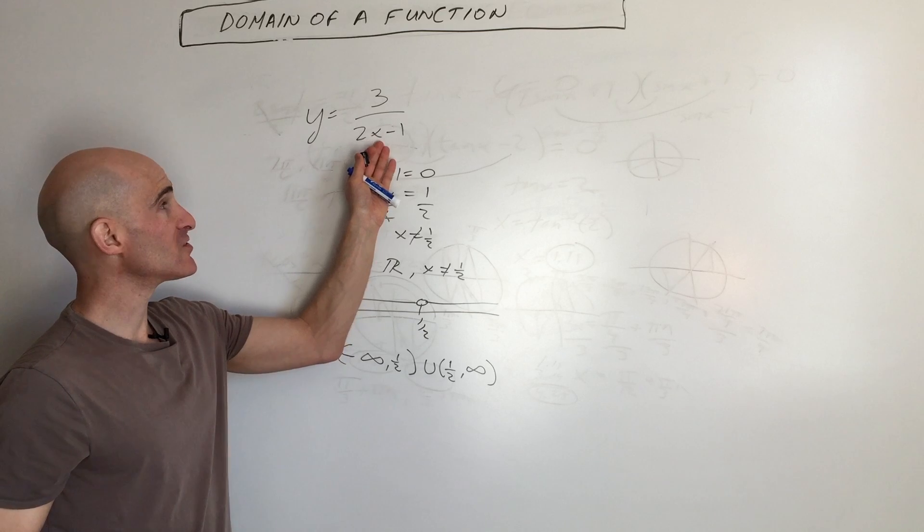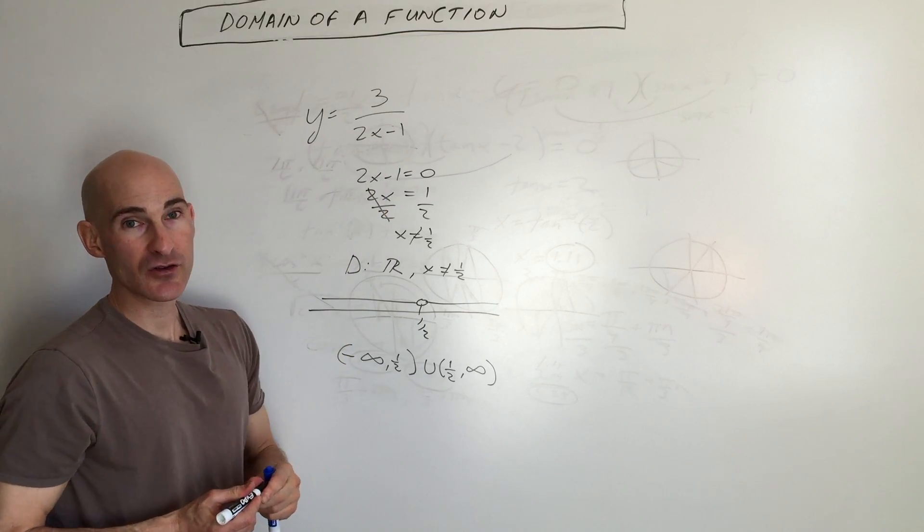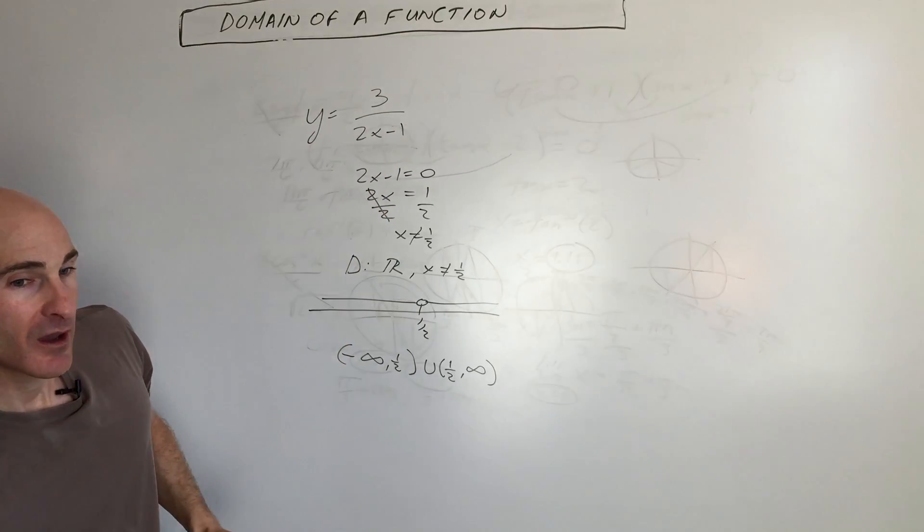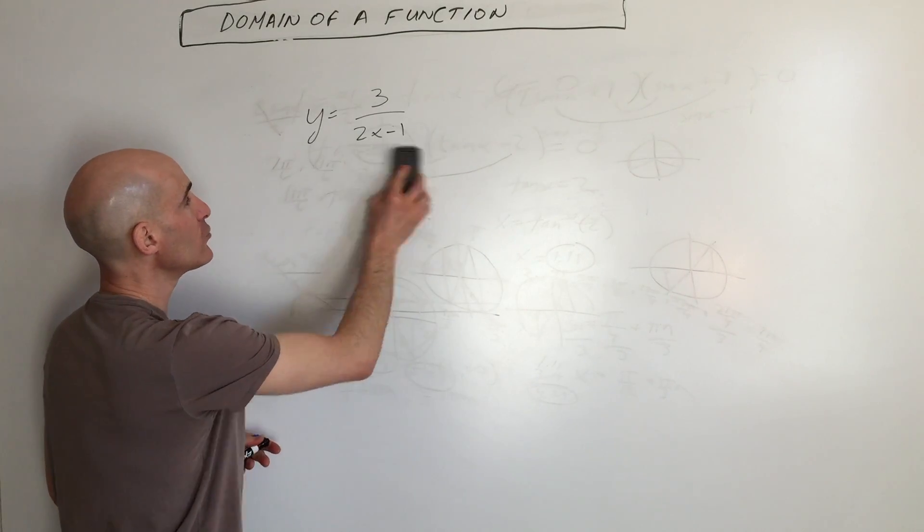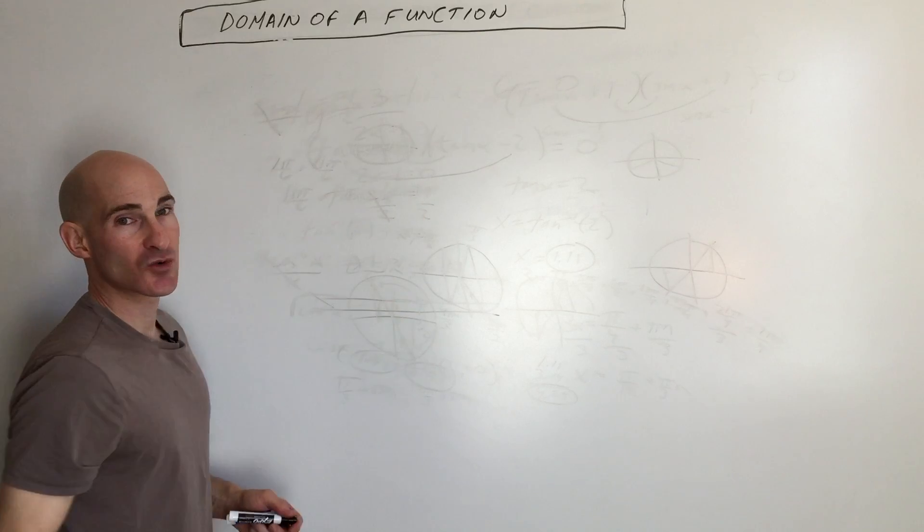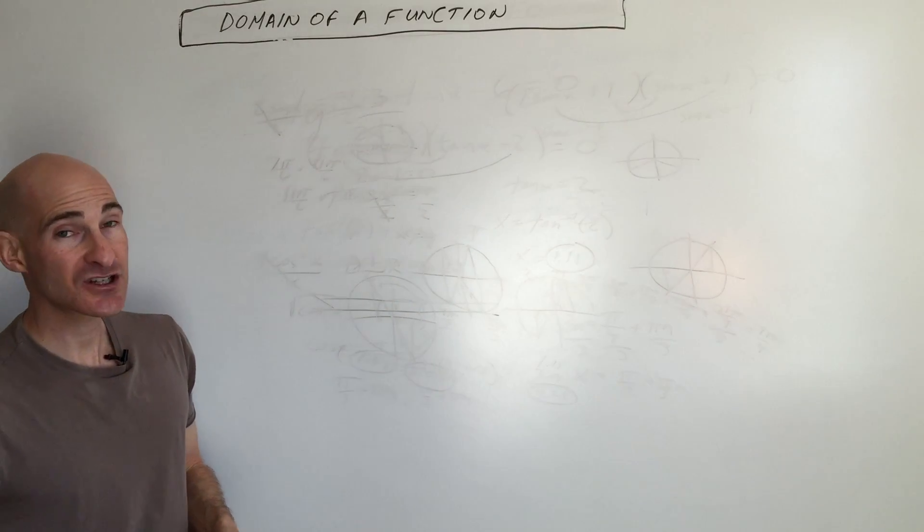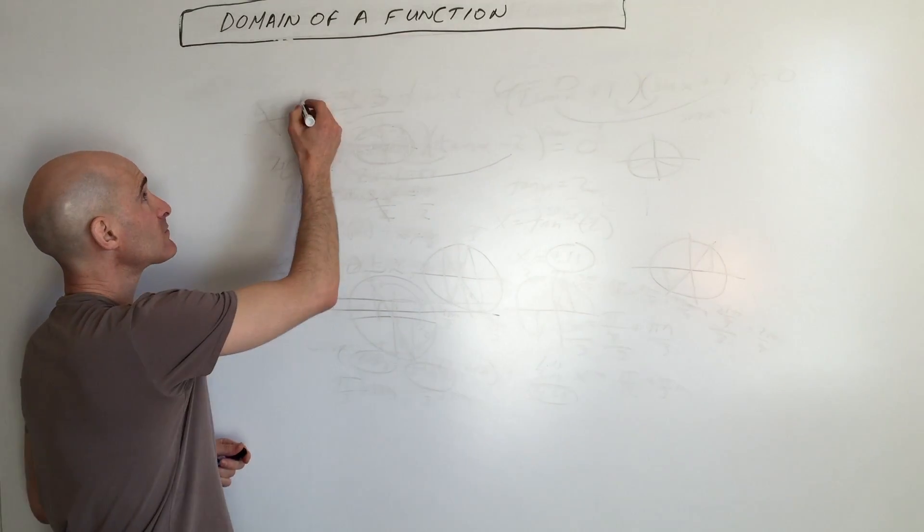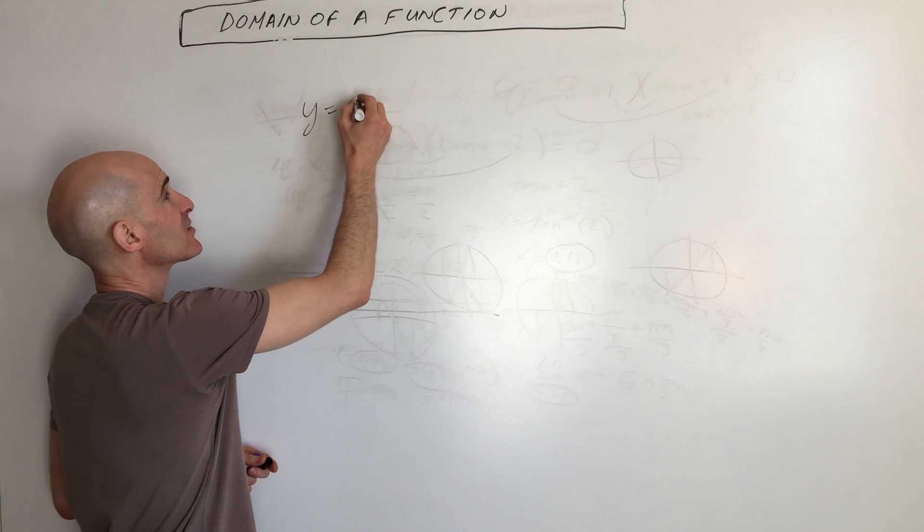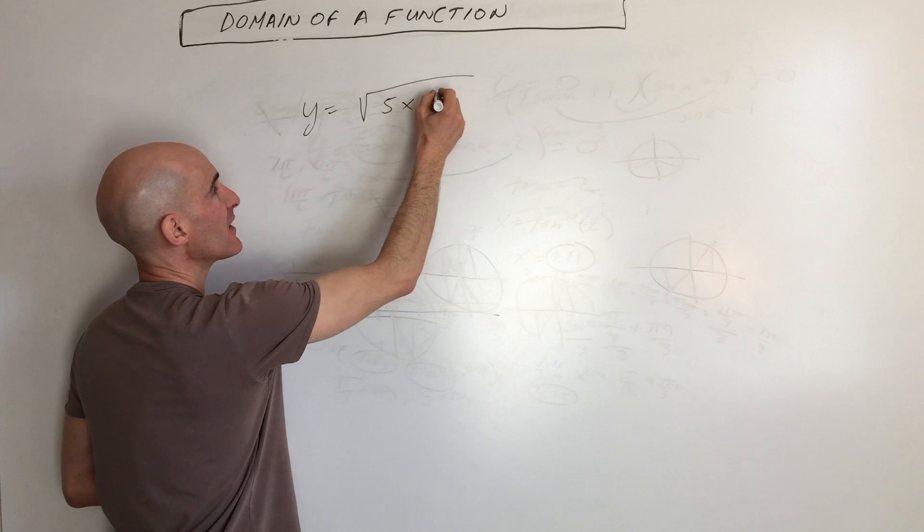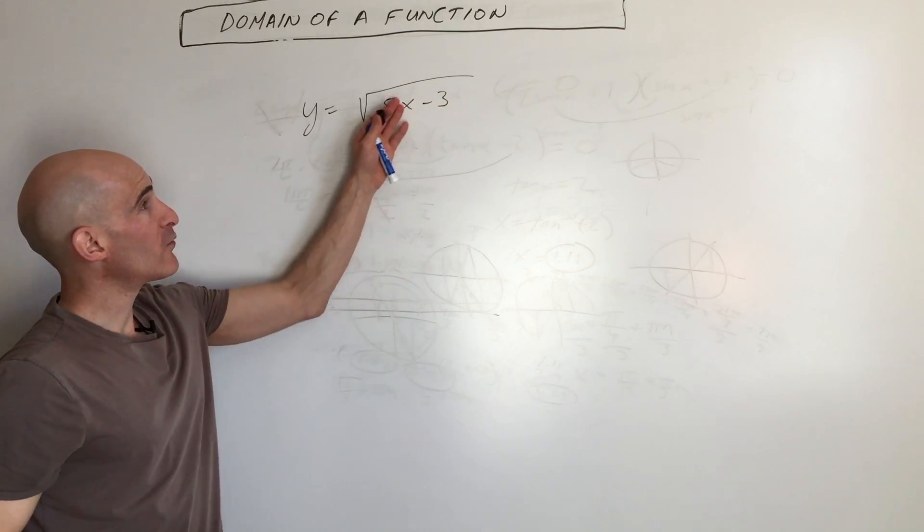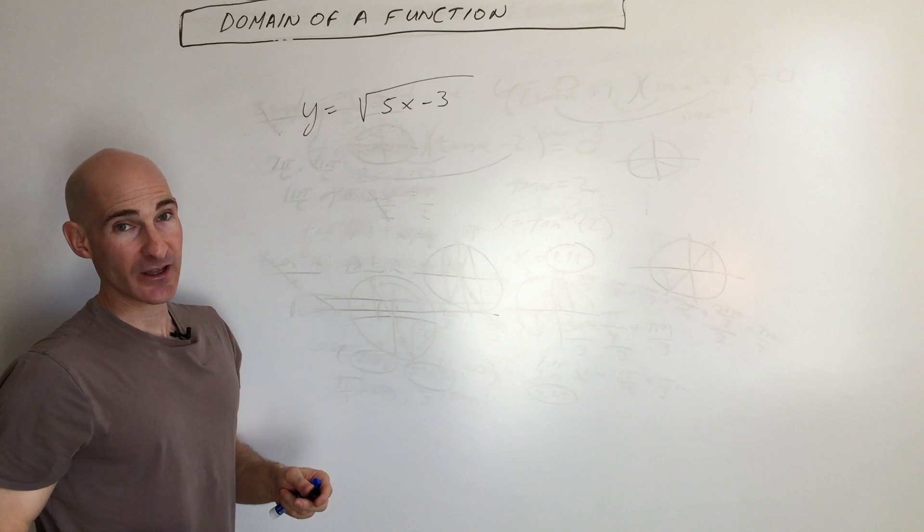But again, the main thing to watch out for is you can't divide by zero. Now, another scenario that comes up is when you have a square root. We know that you can't take the square root of a negative number without getting imaginary numbers. So if you take a look at this function here, y equals, let's just say it's 5x minus 3,